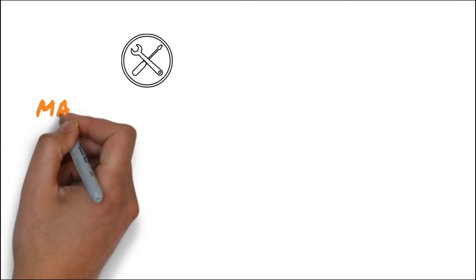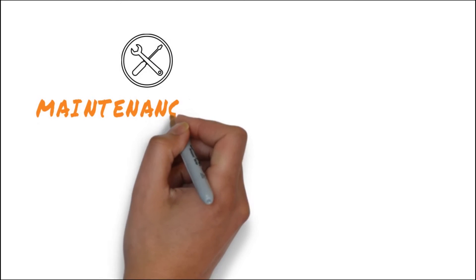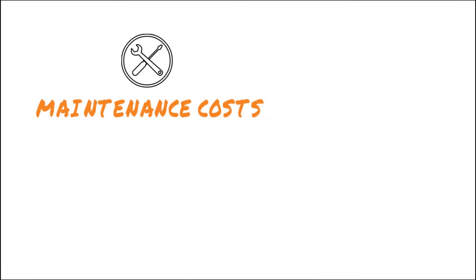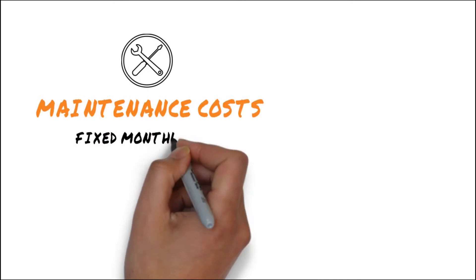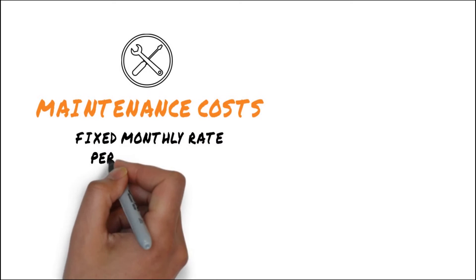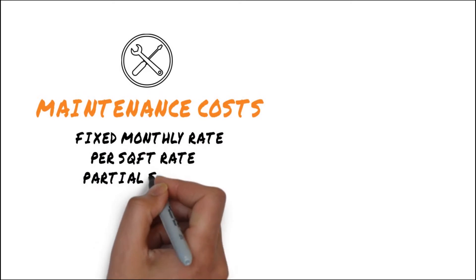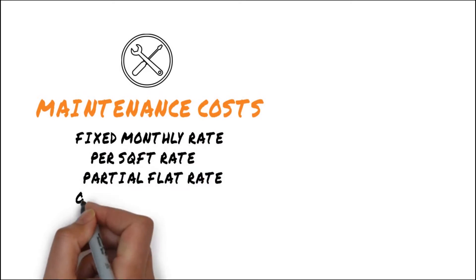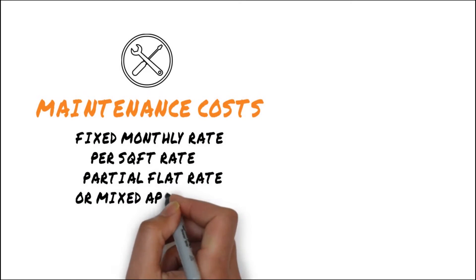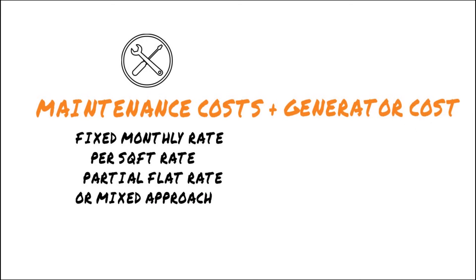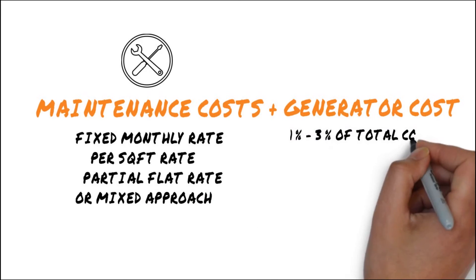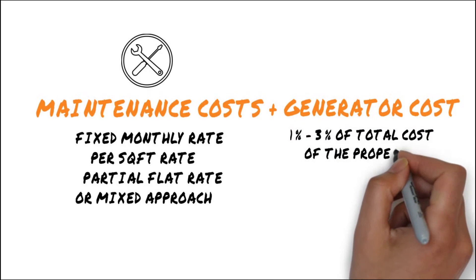A basic charge that's levied to keep the apartment clean and beautiful is the maintenance cost. Builders charge maintenance fees in different ways — in the form of fixed monthly charges, per square feet rate, partial flat rate or sometimes even with a mixed approach. The generator cost is added to this as well, and this fee generally comes up to 1% to 3% of the total cost of the property.